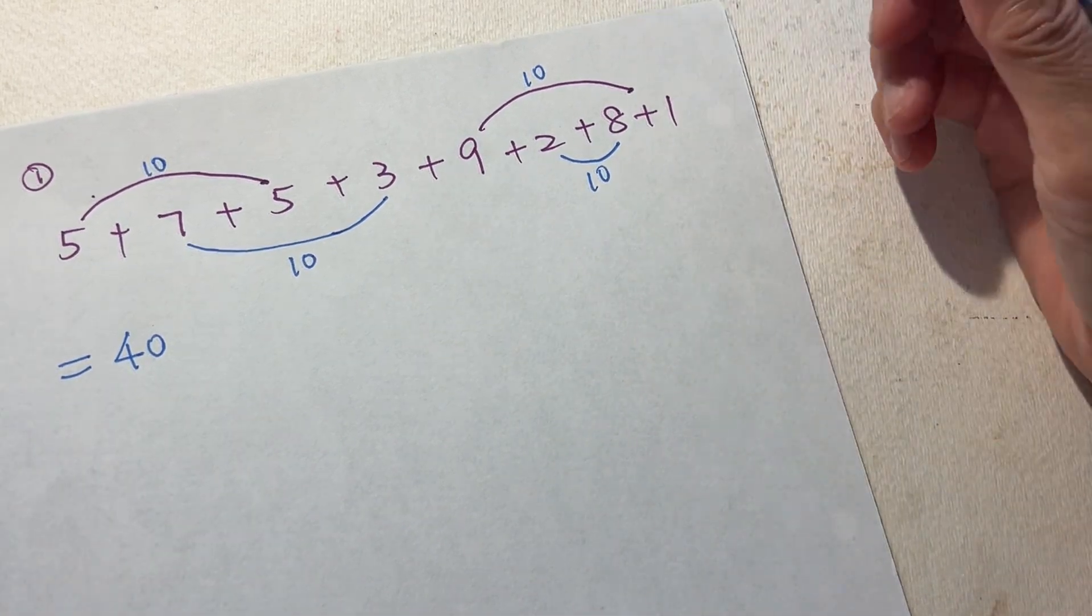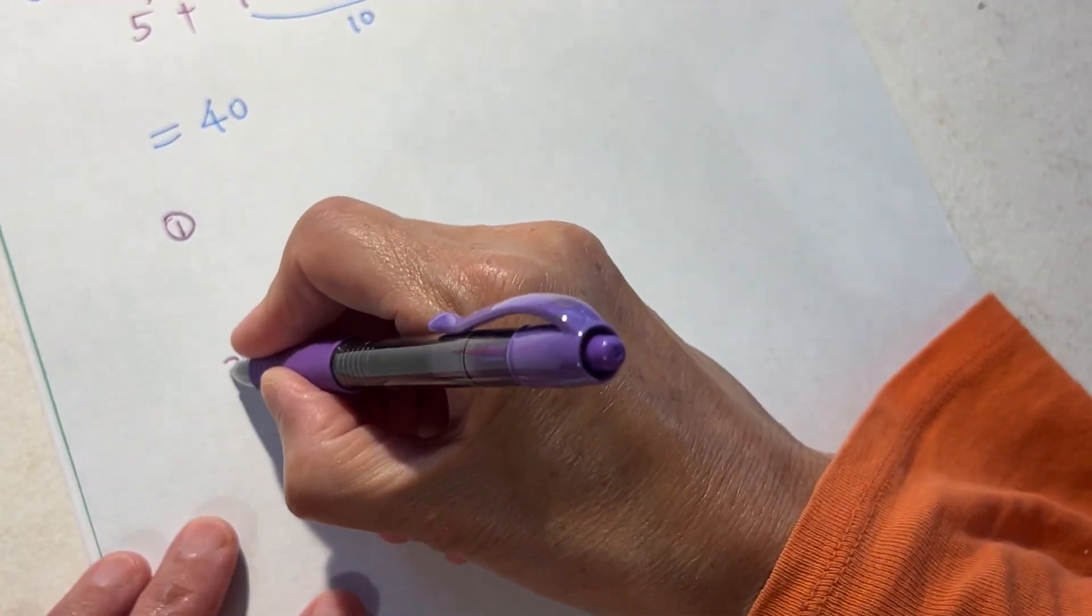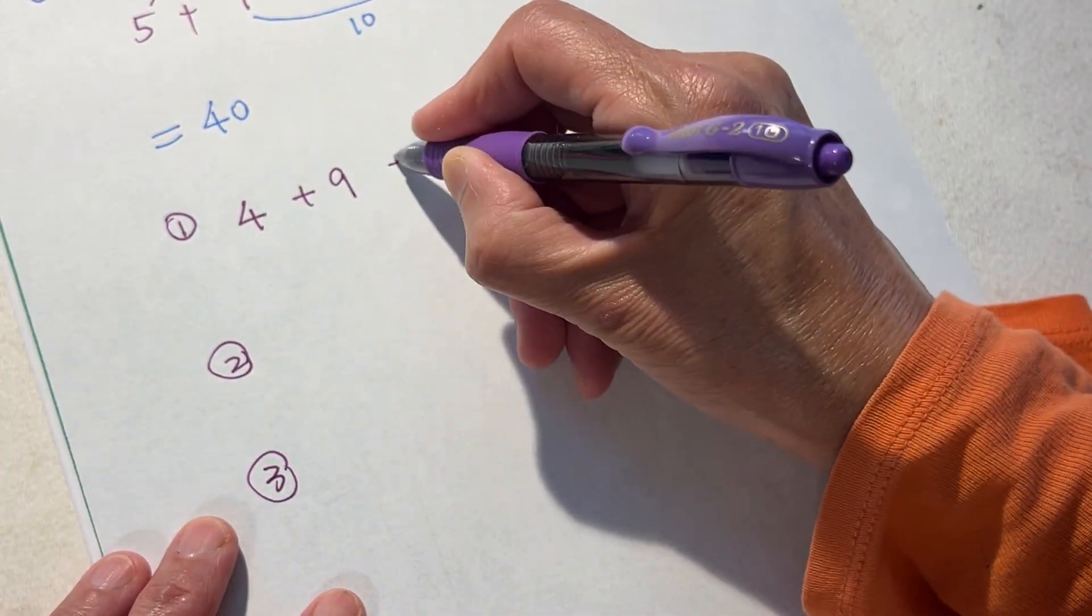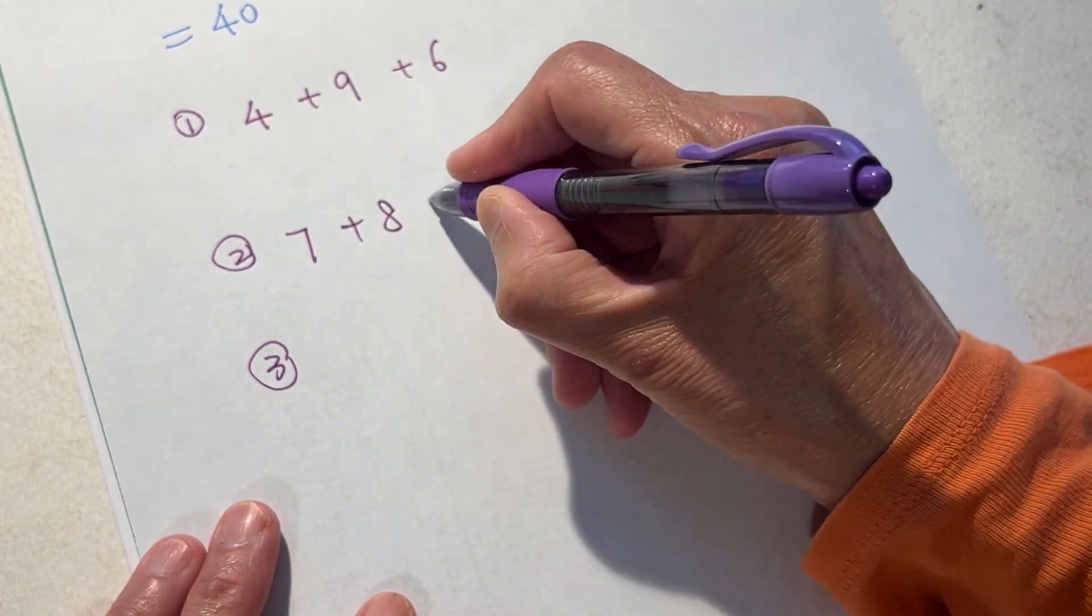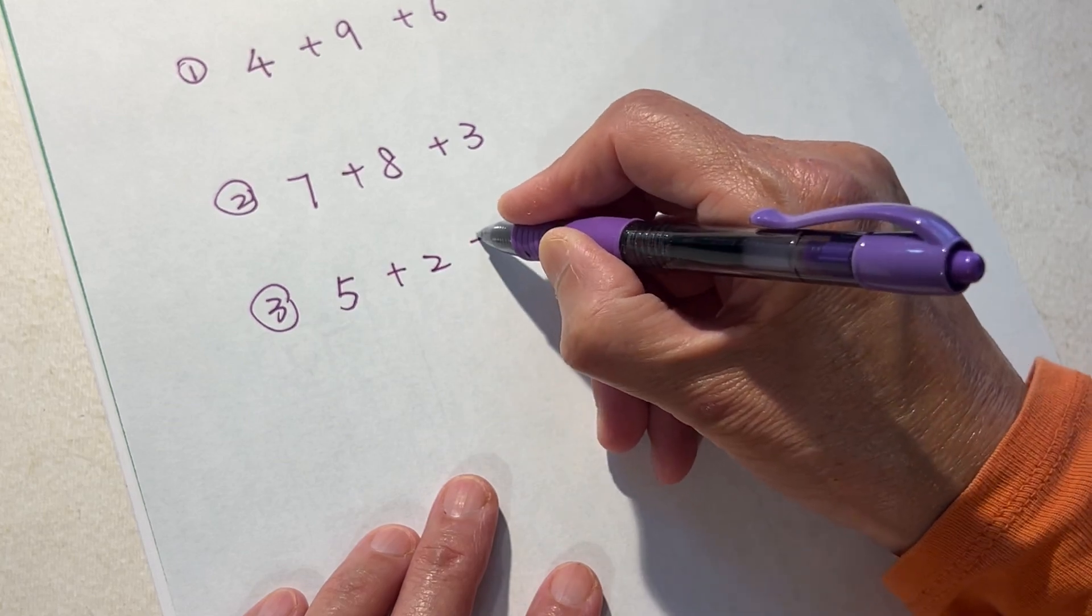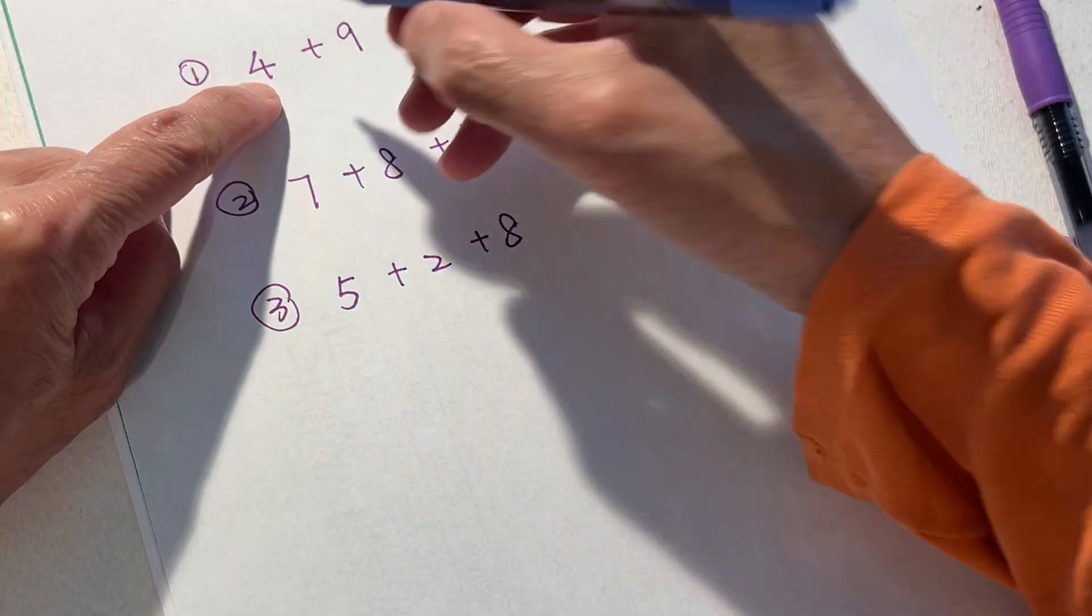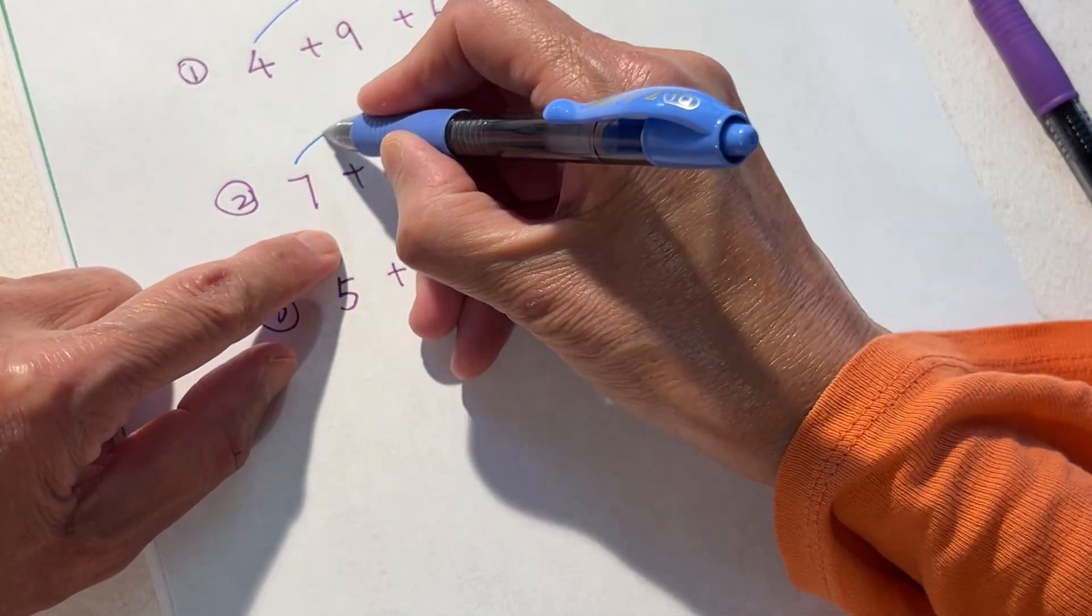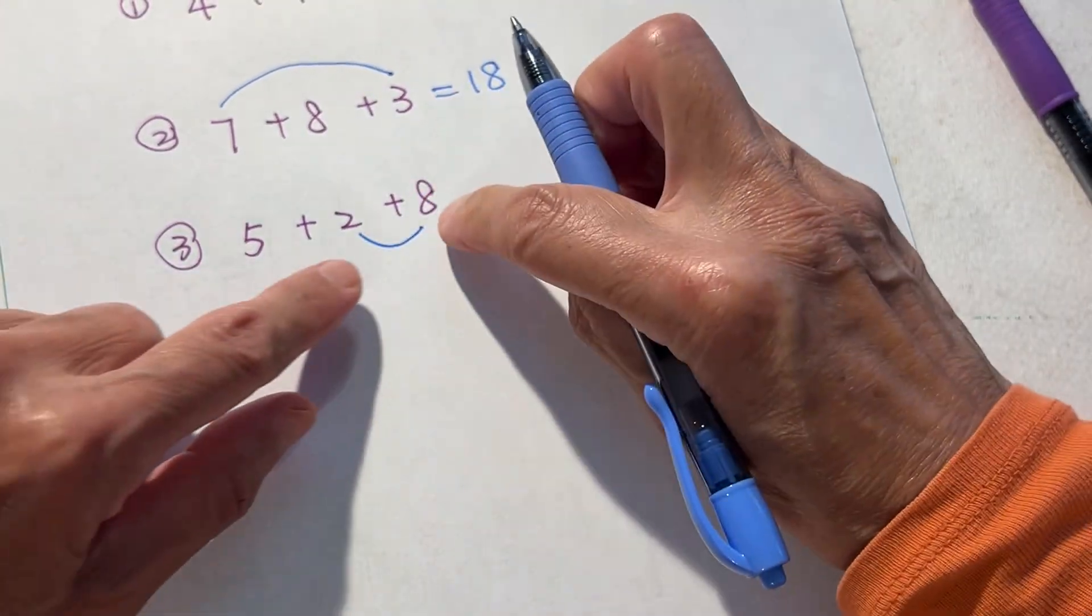I use this method very often in my art class, in my math classroom. So let's do this. So this is 4+9+6, and this one is 7+8+3, and this one is 5+2+8. So this four and six makes ten, so the answer is nineteen. And three and seven makes ten - eighteen. Two and eight makes ten - fifteen.